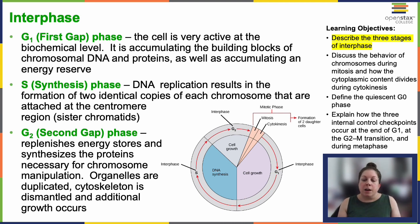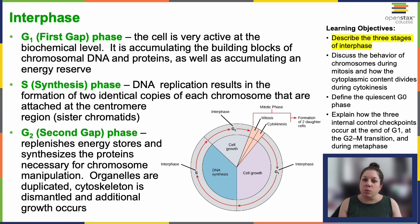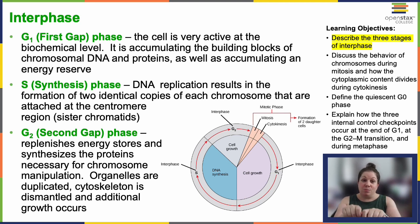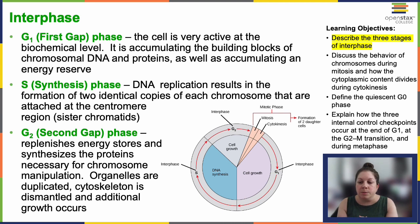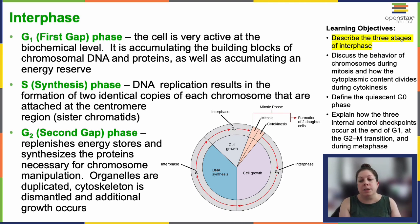The G2 phase is where the cell replenishes its energy source. It's been working hard up to this point and needs to make a bunch of things before moving on. Essential proteins for chromosome manipulation — things like tubulins and motor proteins — are synthesized so chromosomes can be moved apart. Certain organelles are duplicated, and the cytoskeleton begins to be taken apart because the cell is about to change shape, redirecting organelles evenly to both sides of the new daughter cells. These preparations must be completed before the cell can enter mitosis.